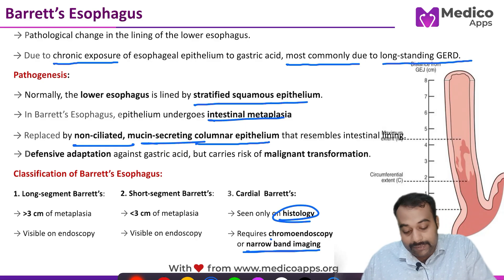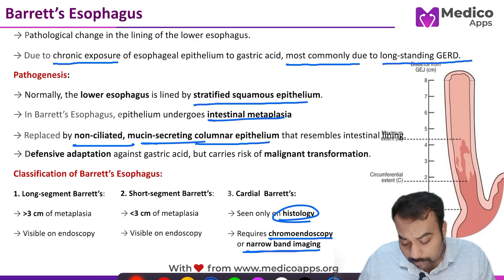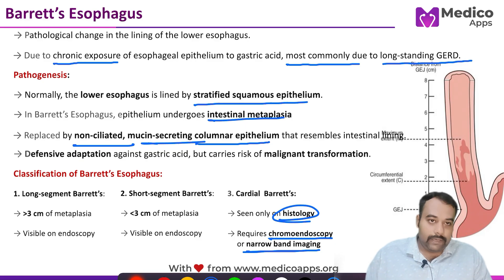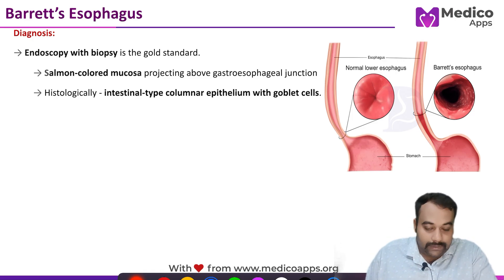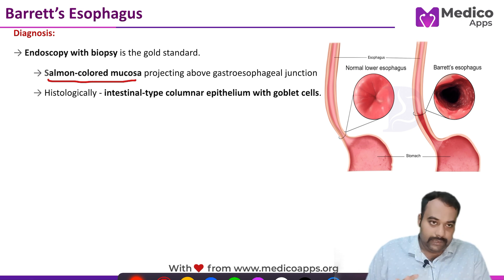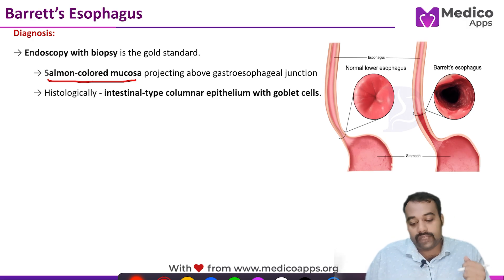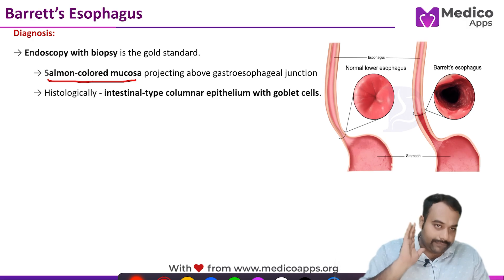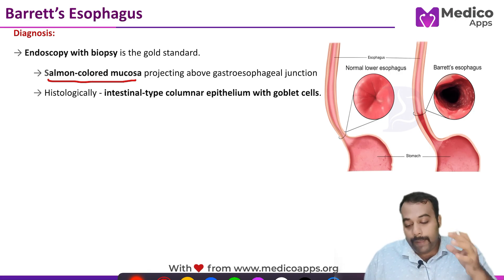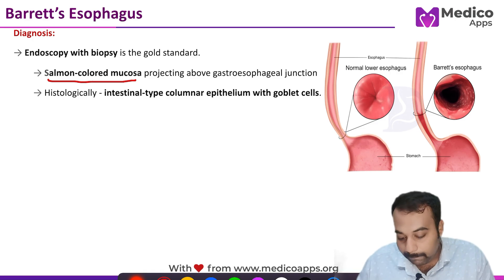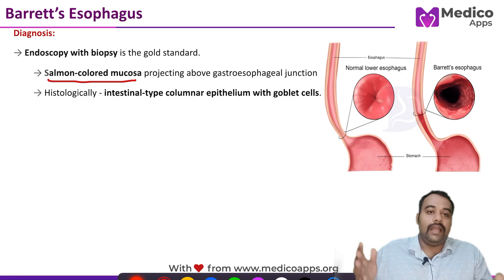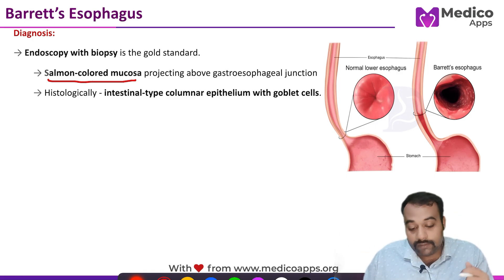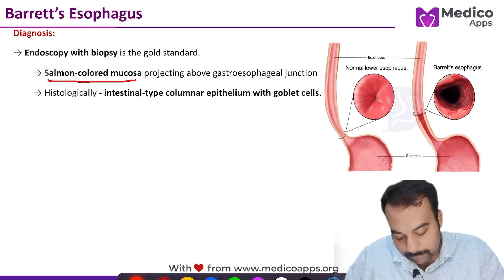Long segment and short segment Barrett's are well visible on endoscopy. During endoscopy, you can see a salmon-colored mucosa projecting into the esophagus from the gastroesophageal junction — a salmon-colored patch at the GEJ. Histologically, as mentioned, these are intestinal-type non-ciliated columnar epithelium, and the presence of goblet cells is the pathognomonic finding, which you can appreciate in the image.